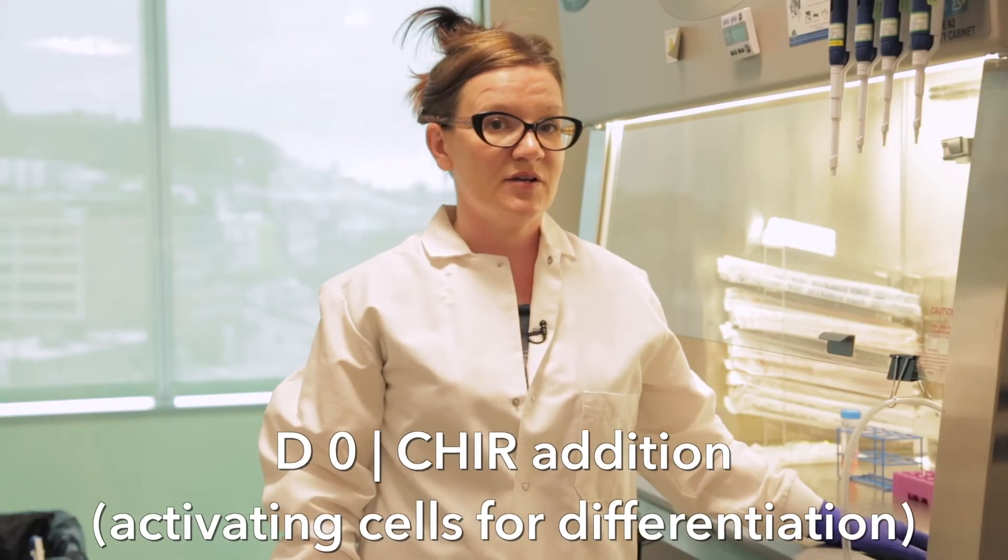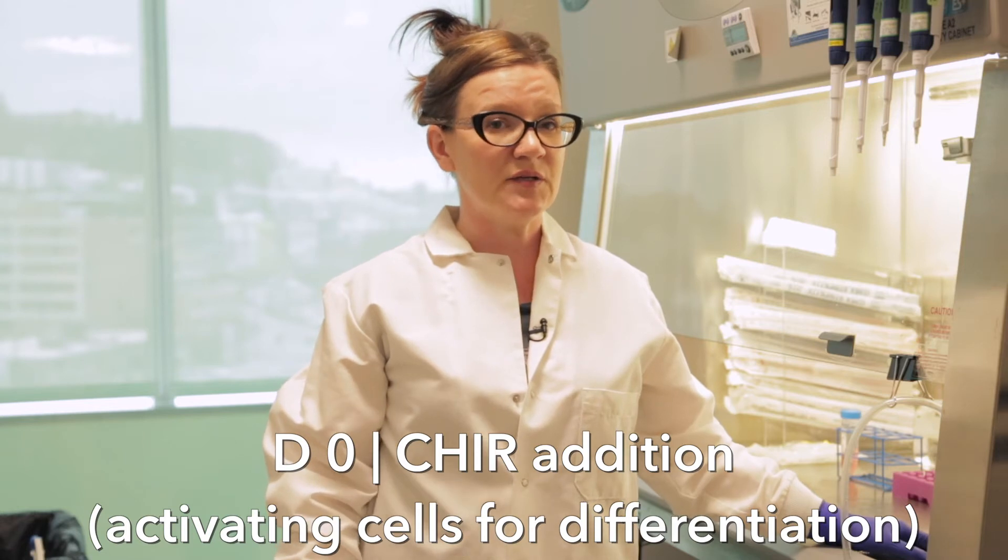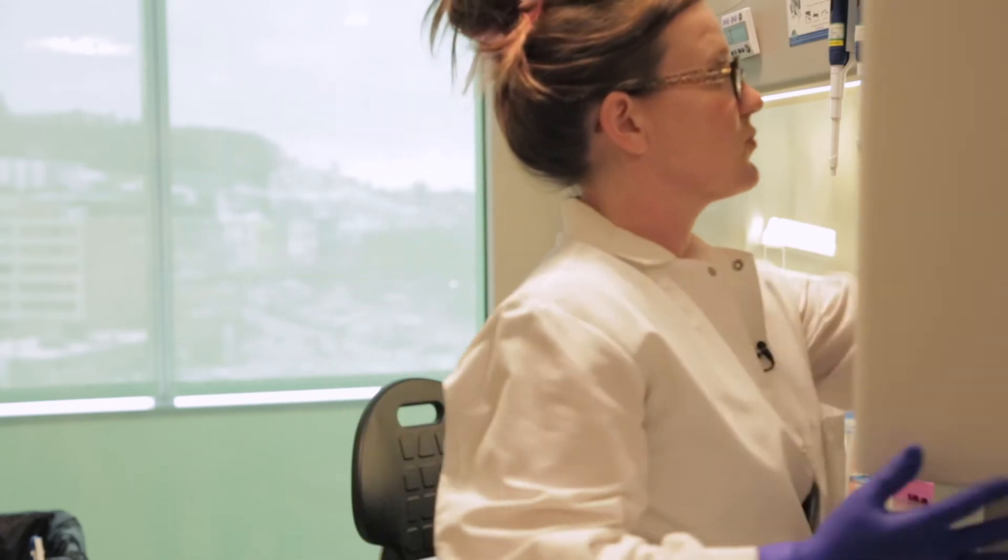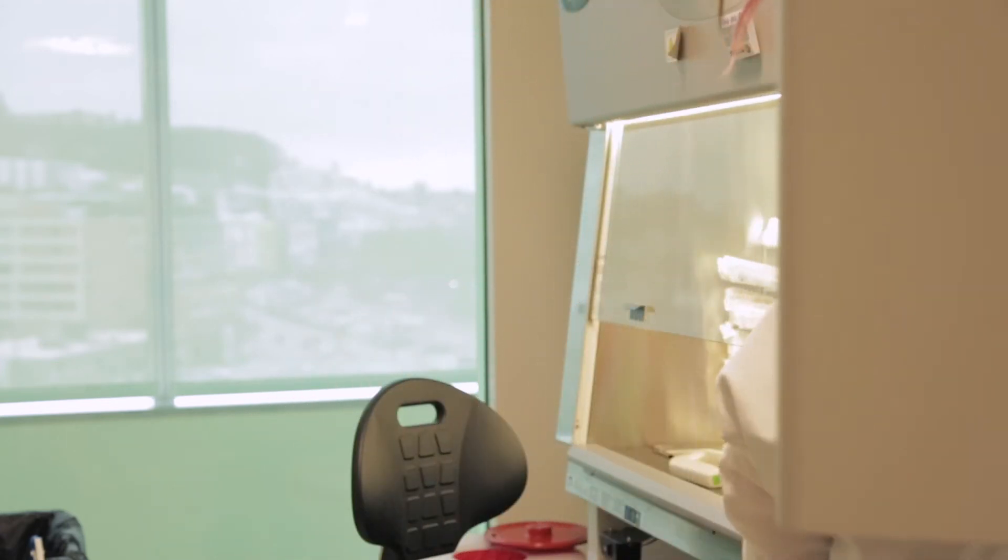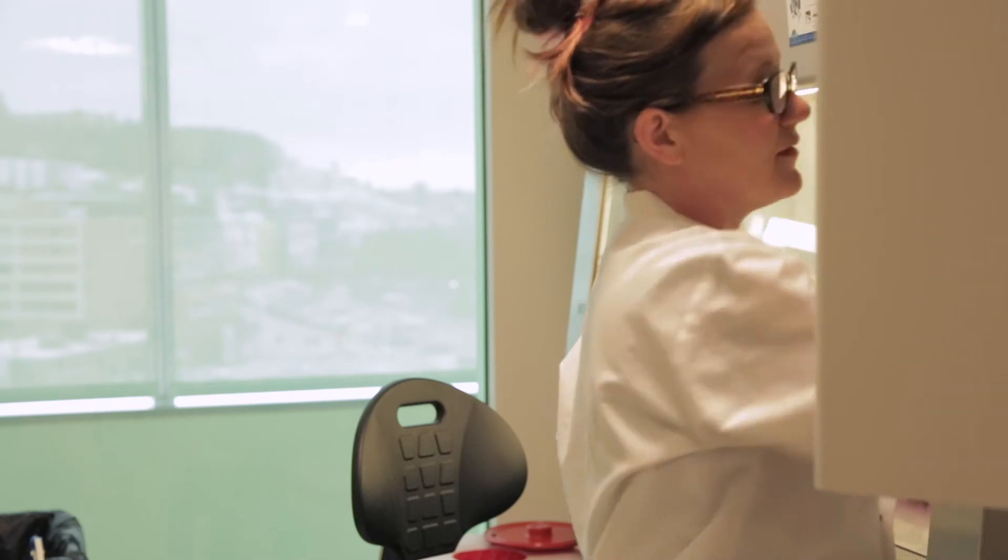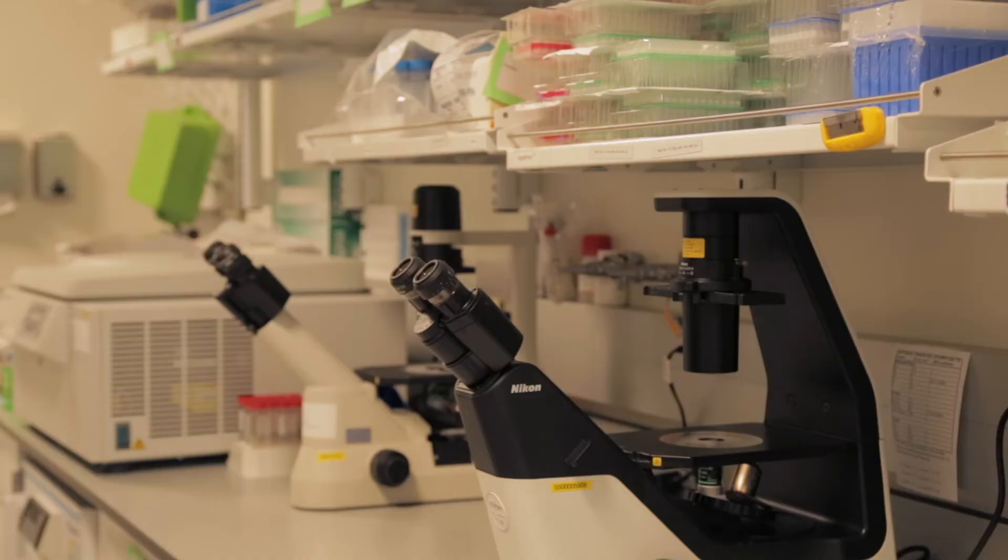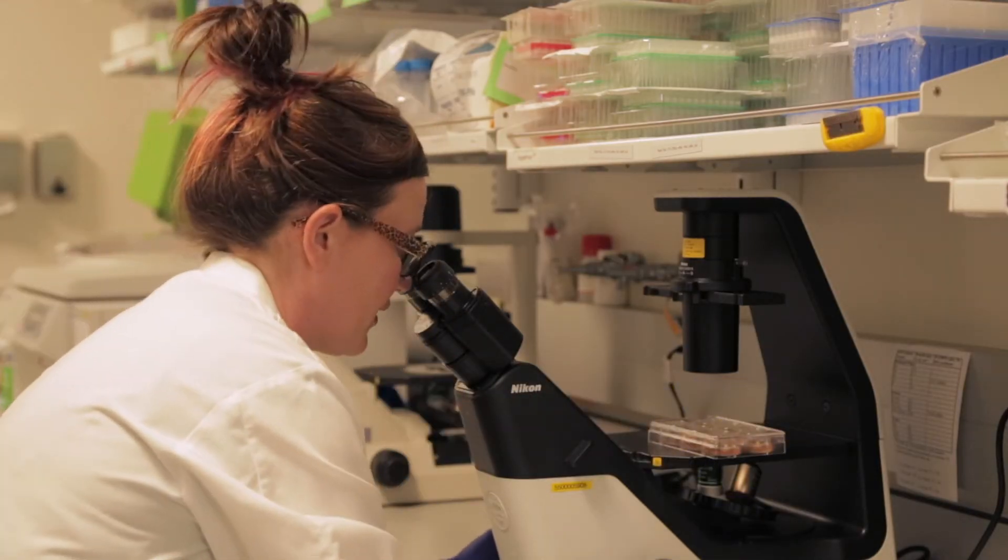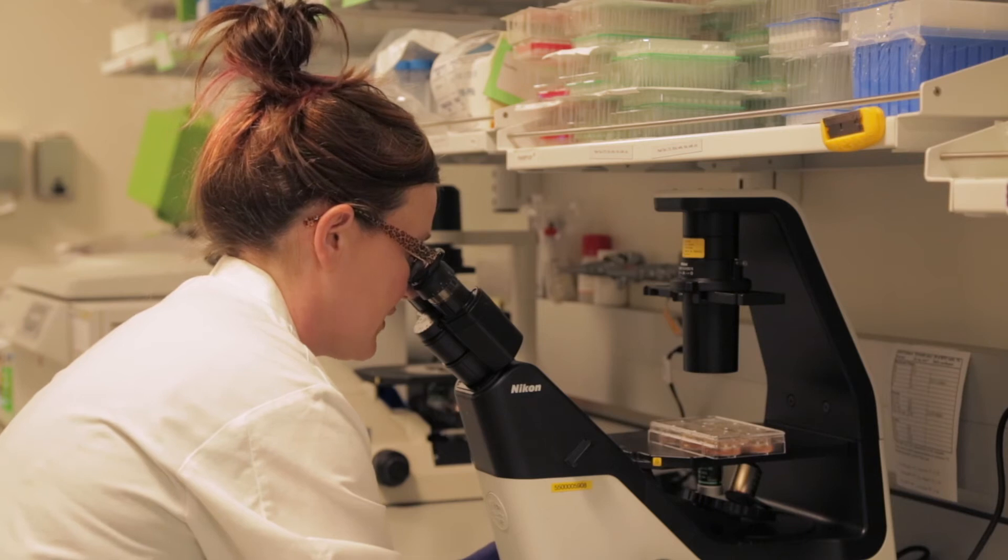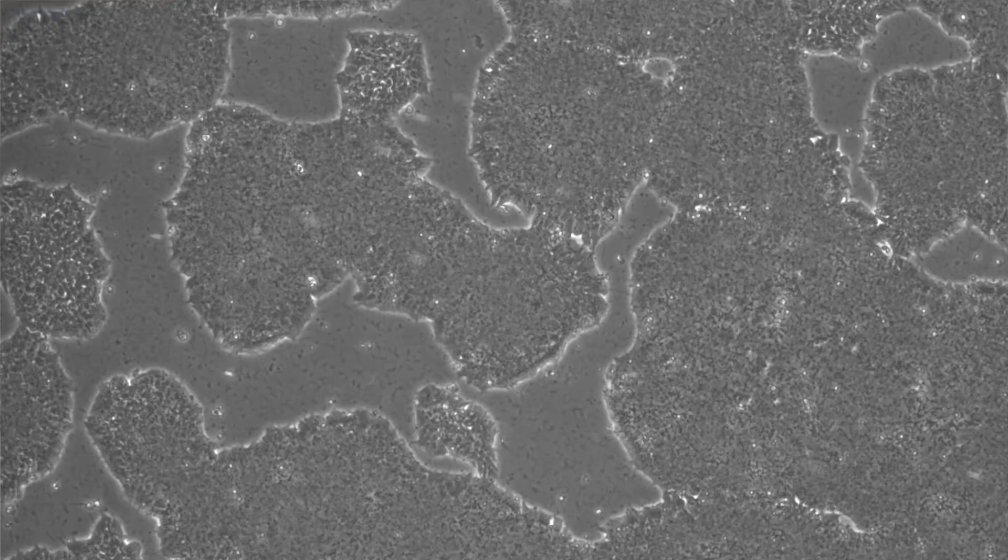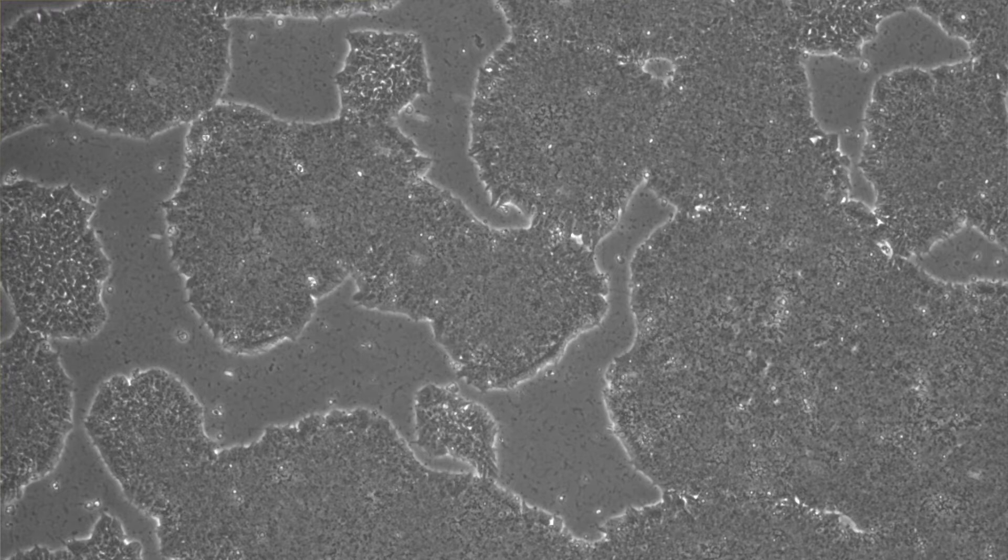Today's day zero and that's when we actually activate the cells for differentiation. Let's quickly look at them under the microscope first to look at confluency and their morphology. So today what I'm looking for is a really nice, undifferentiated stem cell-like morphology. If the cells are not healthy and undifferentiated going into the differentiation, it's likely that it won't work. Also, I'm looking for the different confluencies as I did plate out different densities of cells on day minus three.